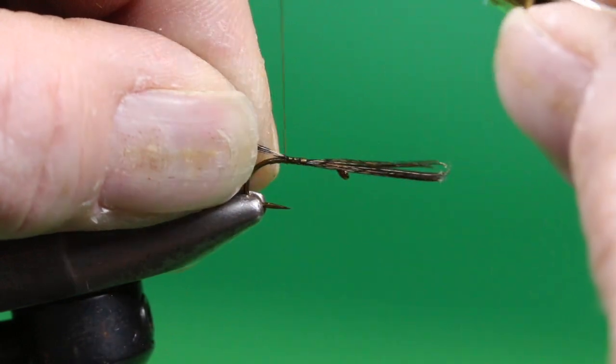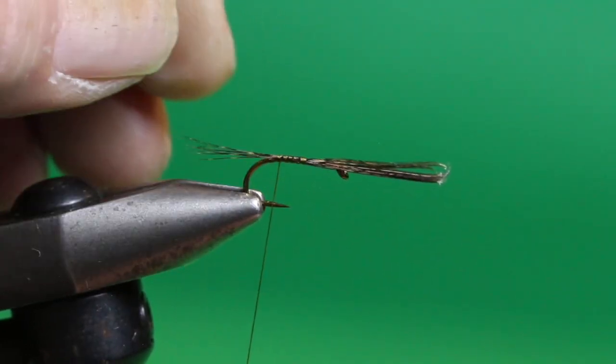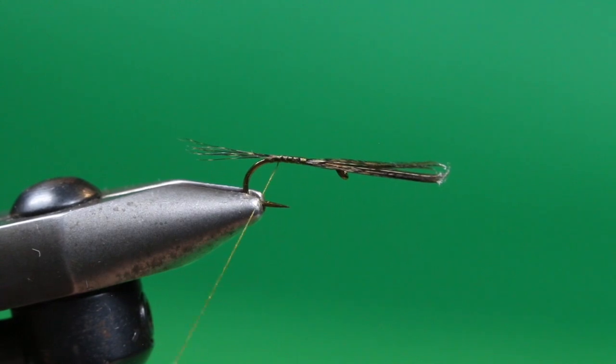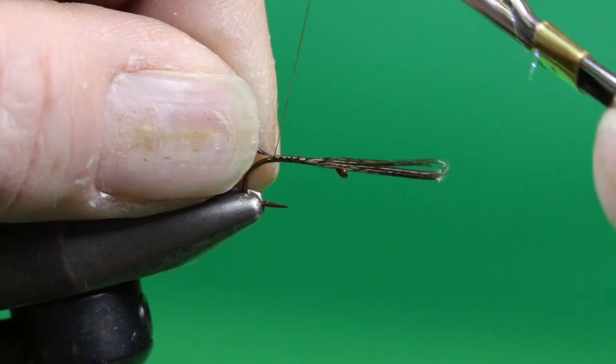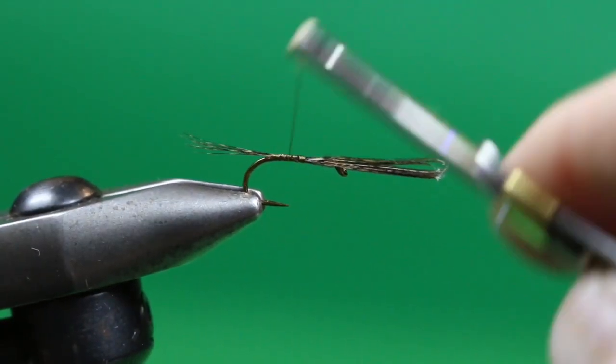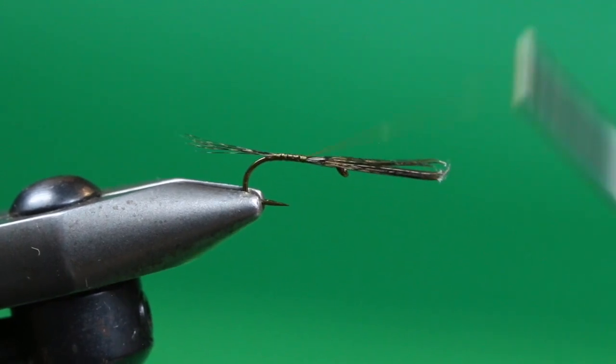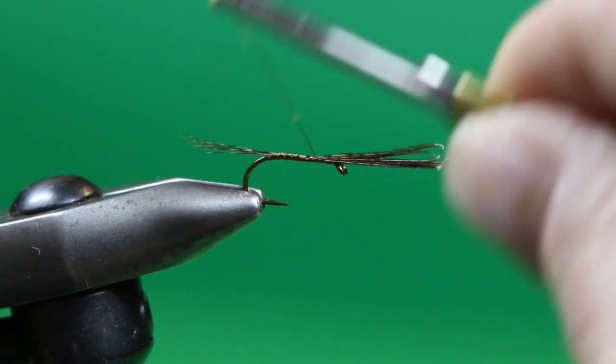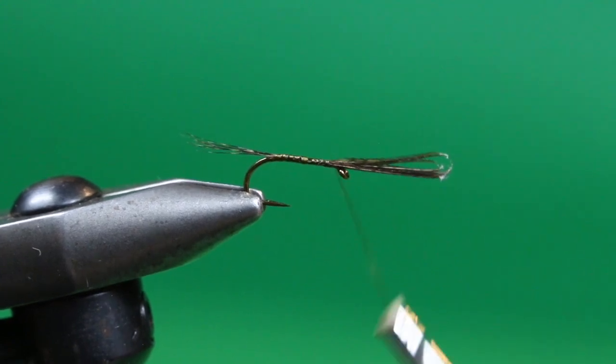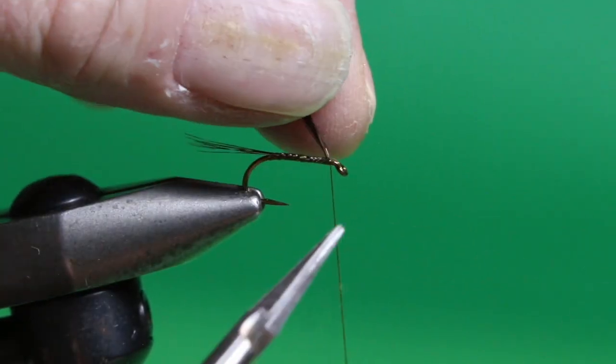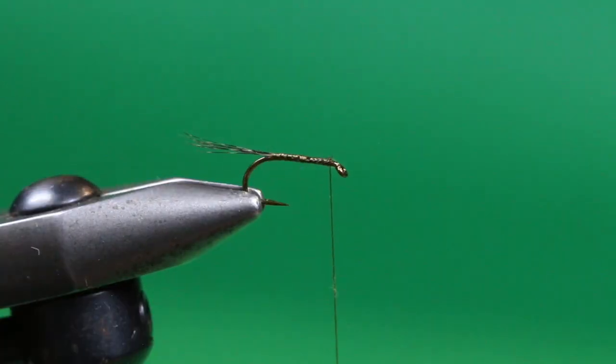I'm just going to walk that thread back. As I get near the bend of the hook, I'm going to reduce the tension on my wraps slightly so I don't accidentally flare these out. I want them gathered. I'm just going to walk the thread forward, get up near the eye about two eye widths back, and trim away the excess.